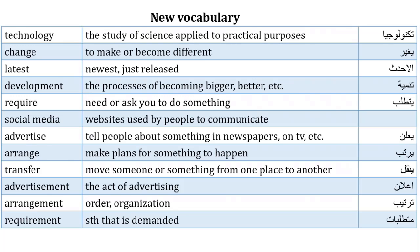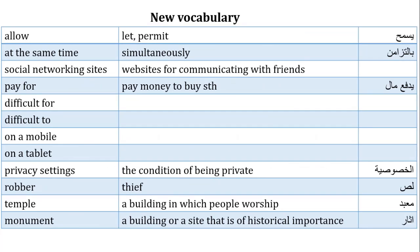Arrange: يرتب، make plans for something to happen. Transfer: move someone or something from one place to another. بننقل شخص أو شيء من مكان لآخر. Arrangement: الاسم من arrange، يعني order أو organization. Simultaneously: at the same time. يعني حاجتين بيحصلوا في نفس التوقيت.